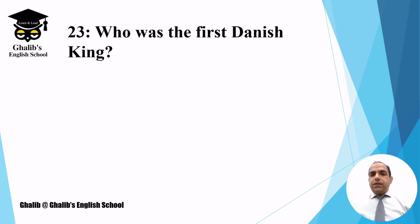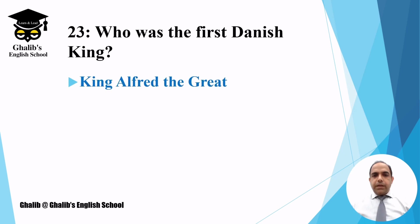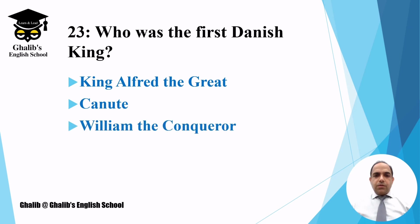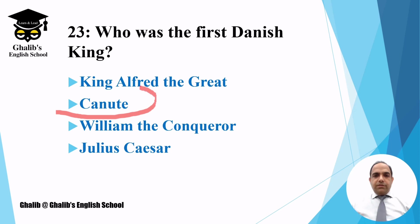Question number twenty-three: who was the first Danish king? The options are King Alfred the Great, Canute, William the Conqueror, or Julius Caesar. The answer is Canute.